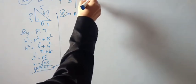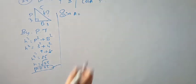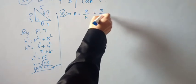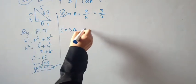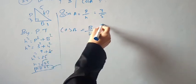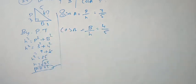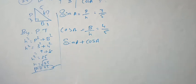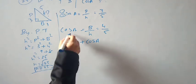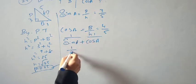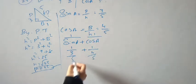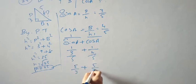Now find 1/sin A + 1/cos A. Sin A = perpendicular/hypotenuse = 3/5; cos A = base/hypotenuse = 4/5. So 1/sin A + 1/cos A = 1/(3/5) + 1/(4/5) = 5/3 + 5/4. Taking LCM of 3 and 4, which is 12: reciprocal gives 5/3 + 5/4.